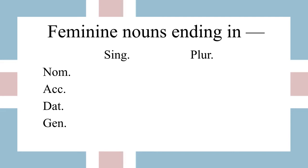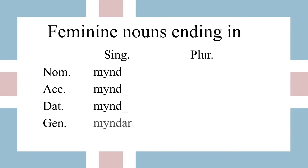The next pattern is for feminine nouns that have no ending, which means that they end in a consonant — but it can be any consonant — and this type of word is generally one syllable. The example we're going to be looking at is mynd, which means picture. Accusative is also mynd, dative is mynd, and genitive is myndar. The definite article endings look similar, but they're not exactly the same, so pay close attention. Nominative we have myndin, accusative myndina, dative myndini, and genitive myndar.